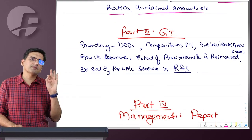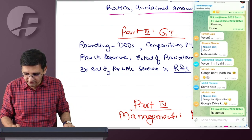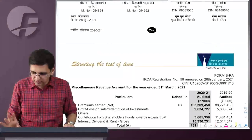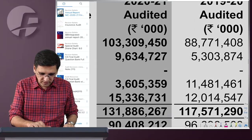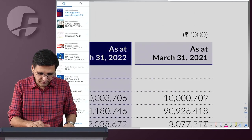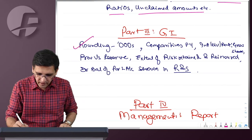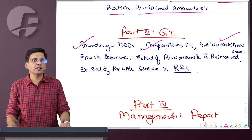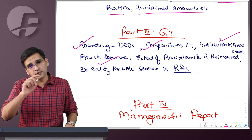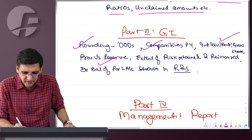General instructions: all insurance companies round off in thousands — this is their mandatory requirement. You will see this in any insurance company's financial statements. Previous year comparative figures are compulsory. Investment income, dividend, and rental income must be shown on a gross basis — interest income separate from interest expense. The difference between provision and reserve: provision is for a liability; reserve is created when no liability exists or excess amount is set aside.